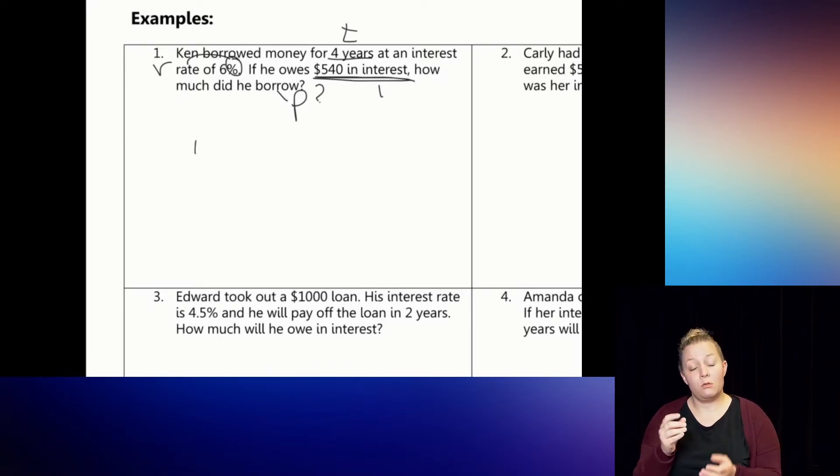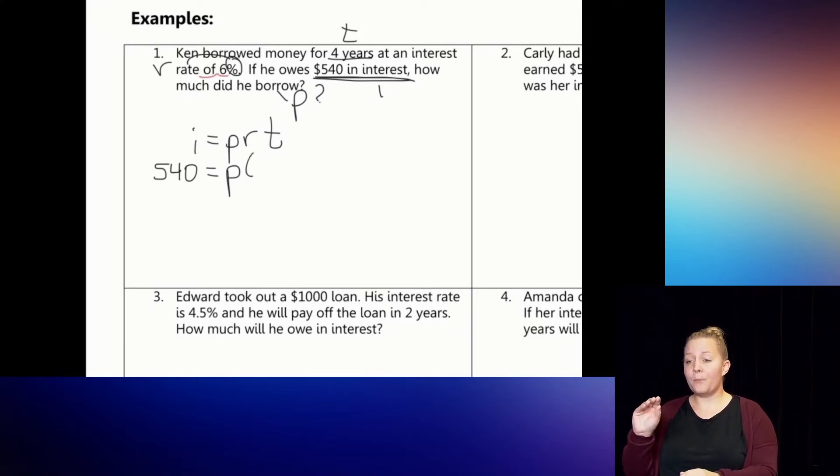So let's write our formula, I equals PRT. And let's substitute in the values we do know. We do know that the I, the interest was $540, equals the P, the principal we do not know, times the rate, which was 6%. But when I take my decimal two spaces left, I know that I'm going to write it as .06 in the equation, and then multiply it times the T, which was years, which is 4.